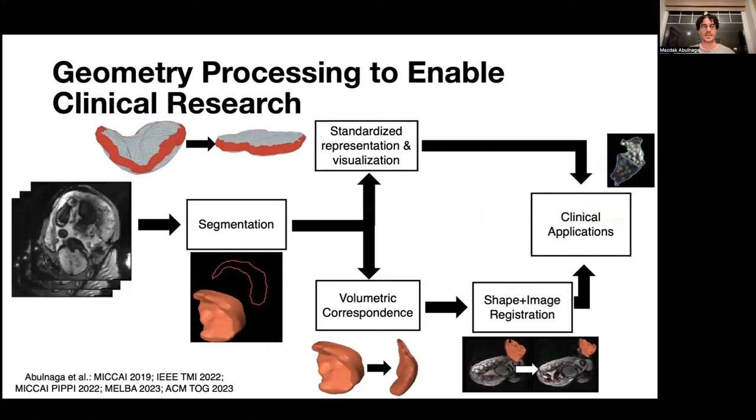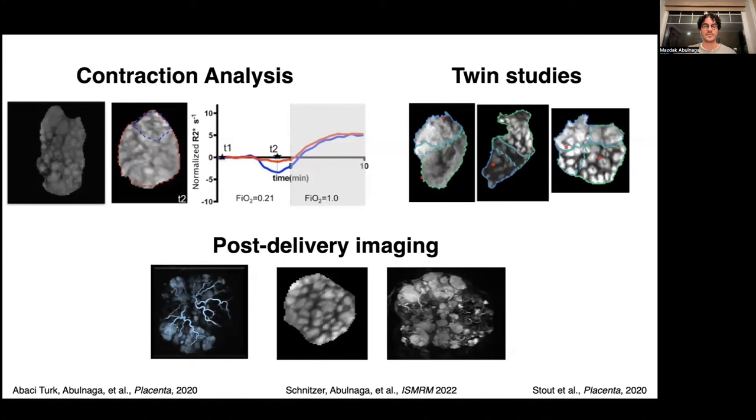To this end, I developed a set of geometry processing algorithms to enable clinical research and applications. Starting from a raw MRI scan, we proposed a shape-aware segmentation method to extract the 3D placental shape, which we can then use in our volumetric correspondence approach and extensions that include image information. We also tackled the problem of volumetric parametrization to unfold the placental volume to a standardized representation.